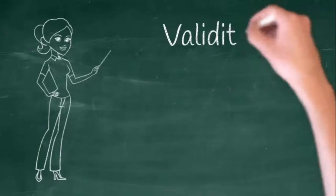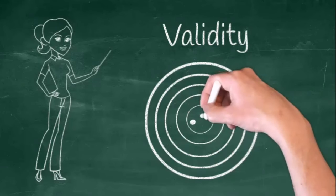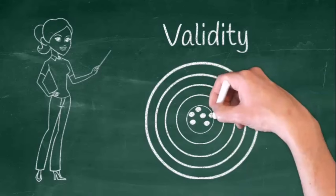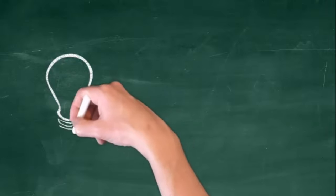While validity refers to how accurately a method measures what it is intended to measure. If research has high validity, that means it produces results that corresponds to real properties, characteristics, and variation in the physical or social world. A valid method is a true method.